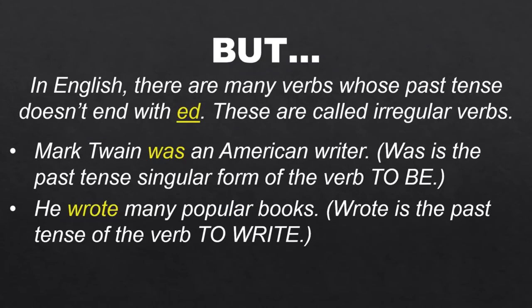But in English, there are many verbs whose past tense doesn't end with -ed. These are called irregular verbs. For example: 'Mark Twain was an American writer.' 'Was' is the past tense singular form of the verb 'to be.' 'He wrote many popular books.' 'Wrote' is the past tense of the verb 'to write.'